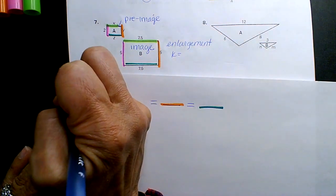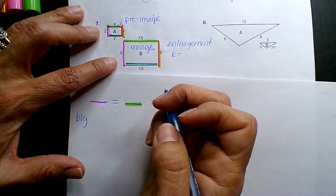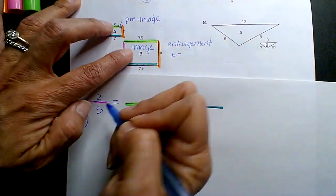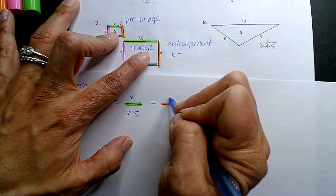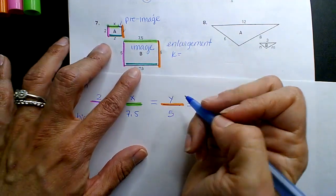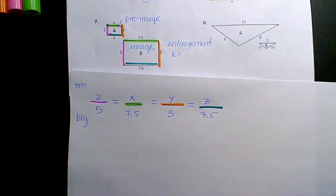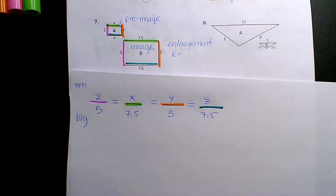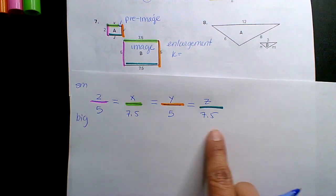So, I'm going to go small over big. So, I'm going to go 2 over 5, X over 7.5, Y over 5, Z over 7.5. Now, remember, if you're able to solve these in your head because you're able to identify the scale factor, awesome. But, like I said, we're leading into trig with radicals, so I have to do it the proper way so that when I get to the radicals, you guys have this foundation.